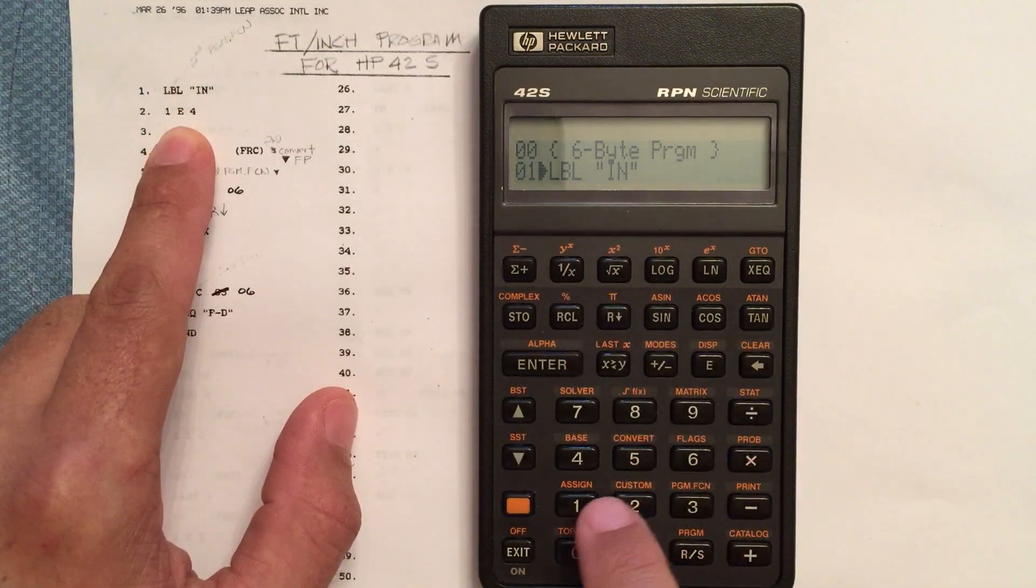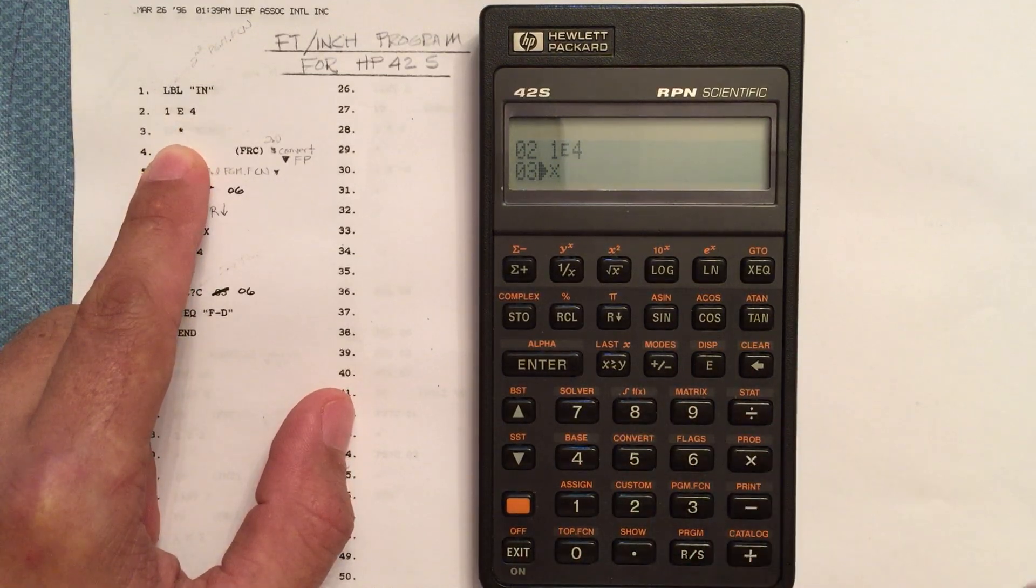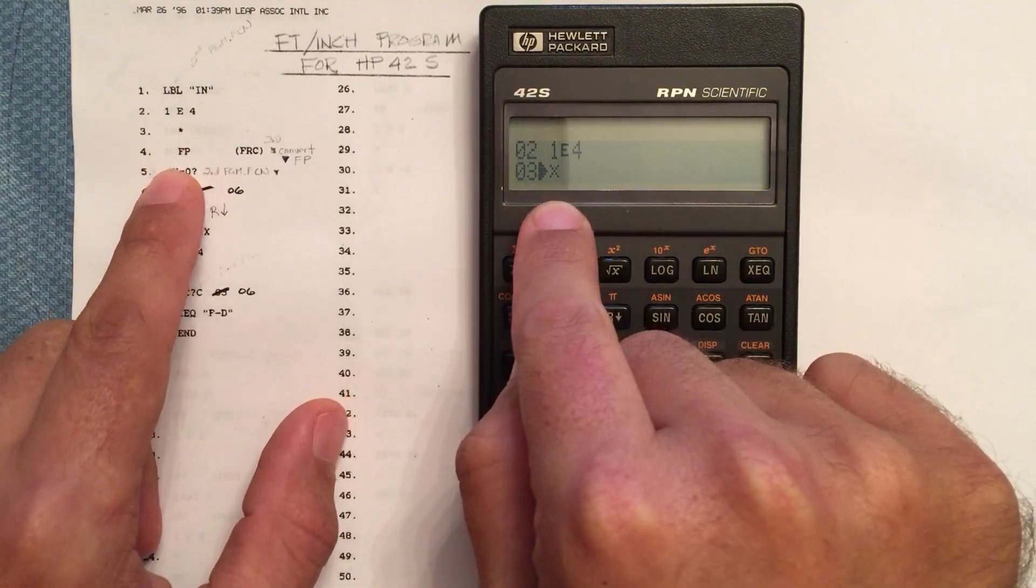Now let's enter in 1 times 10 to the 4th. So 1e4. Let's multiply that. So we're on line 3. We just multiplied.